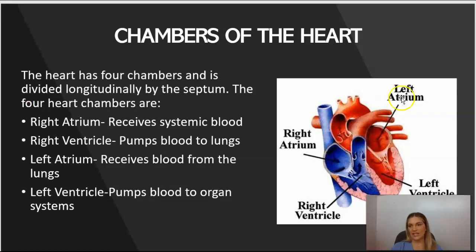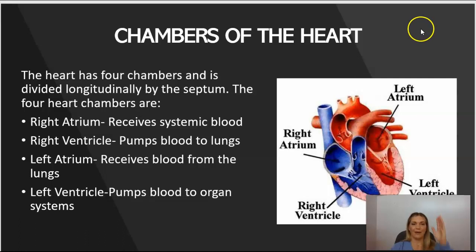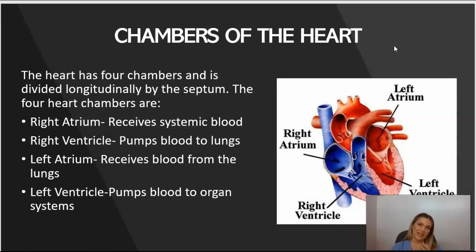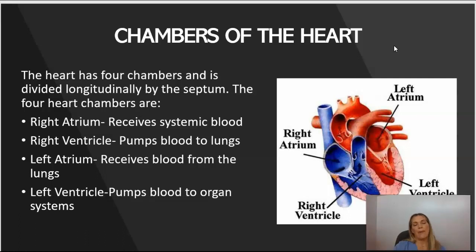Here you can see in this picture the chambers of the heart. The heart has four chambers divided longitudinally by the heart septum. The four chambers include the right atrium, which receives systemic blood from the body; the right ventricle, which pumps blood into the lungs; the left atrium, which receives oxygenated blood from the lungs; and the left ventricle, which pumps blood back to the organ systems.